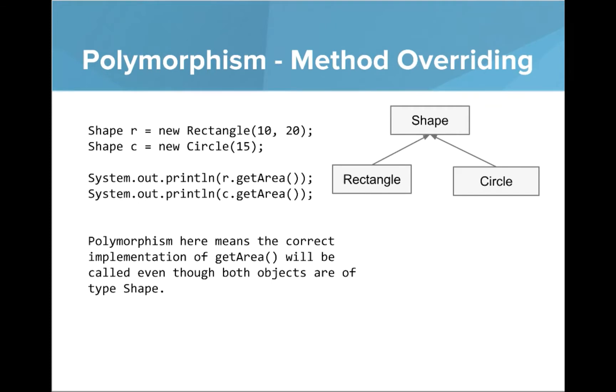So if we go look back at that code with a small snippet of our shape hierarchy, we can see shape r equals new rectangle, shape c equals new circle, and then you see we call system.println to r.getArea and c.getArea. And so this version of polymorphism is happening with method overriding. Polymorphism here means that the correct implementation of getArea will be called even though both objects are of type shape. And that's because we're going to call the specific implementation of getArea on the correct object.